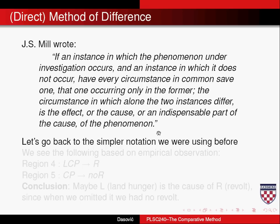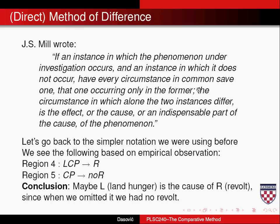The direct method of difference is essentially the opposite of the method of agreement. If an instance in which the phenomenon occurs and an instance in which it does not occur have every circumstance in common save one, then that one is the cause. In region four, we have three causes present and revolt occurs; in region five, we have two of those causes and no revolt. The method of difference looks at which independent variable differs leading to a different outcome — and here it must be land hunger, since when we omit it, we have no revolt.